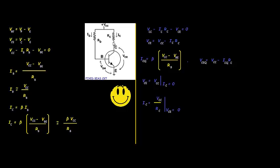The collector current IC equals beta times IB, where beta is the current gain and IB is the base current. Substituting, IC equals beta times (VCC minus VBE) divided by RB, which is approximately equal to beta times VCC divided by RB.